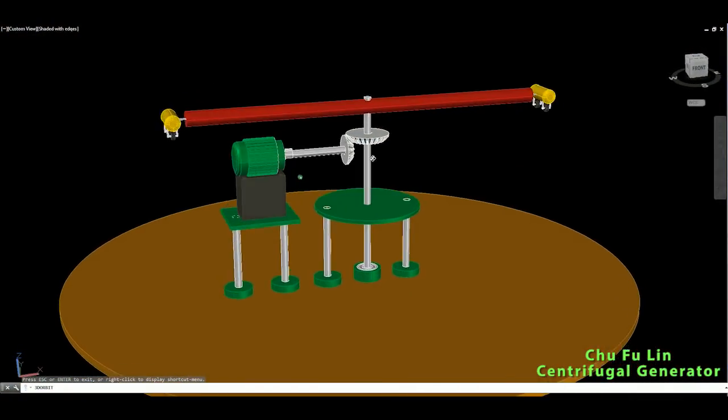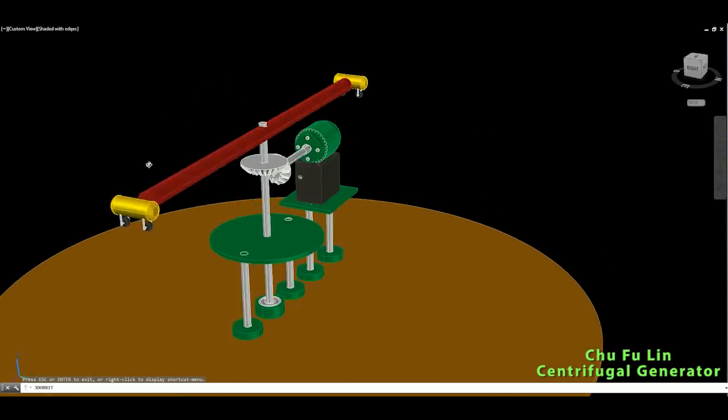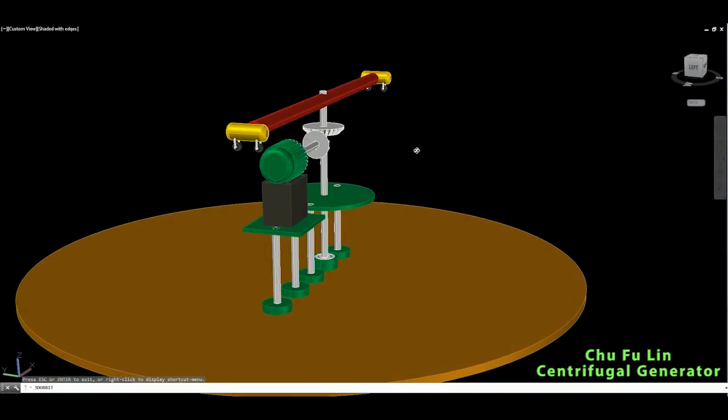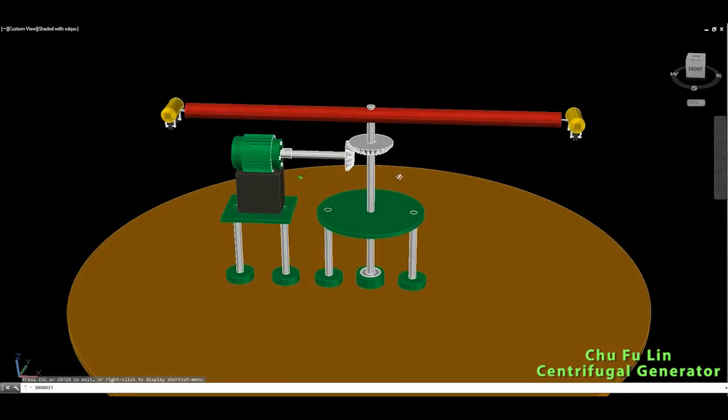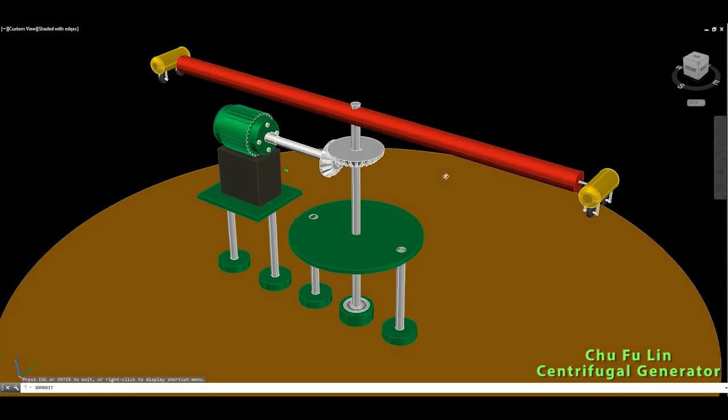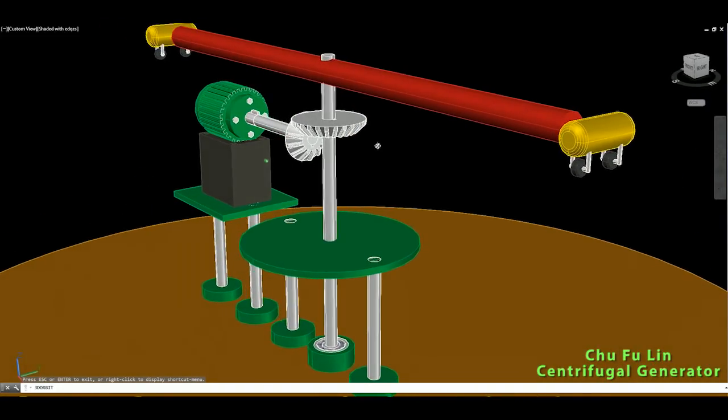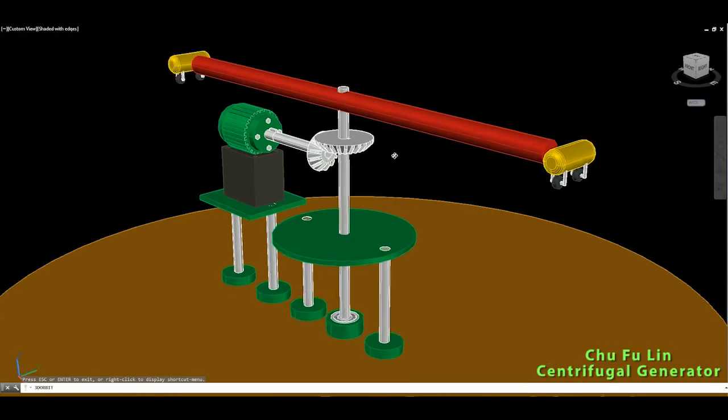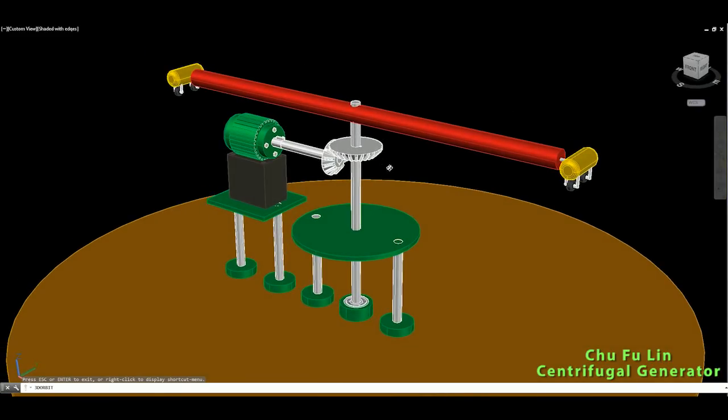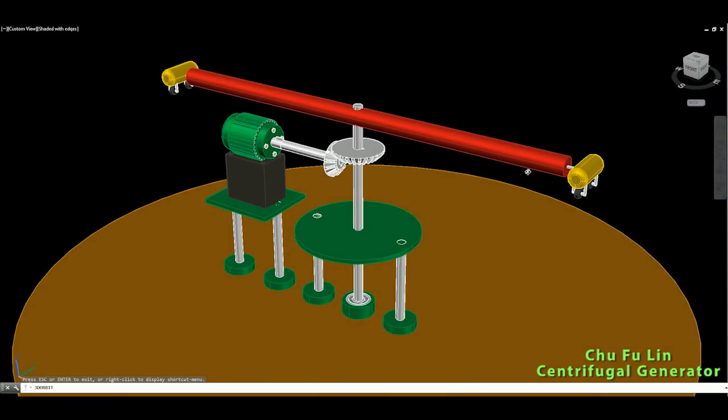All right viewers, so this is it, Chu Fu Lin Electricity Generation System. So what's that, centrifugal driving, it's obvious. So we will have like these two vehicles, you can see, we have some wheels on the bottom of these vehicles will spin in circle. Of course, not on the air, but on the ground, which I will show later.